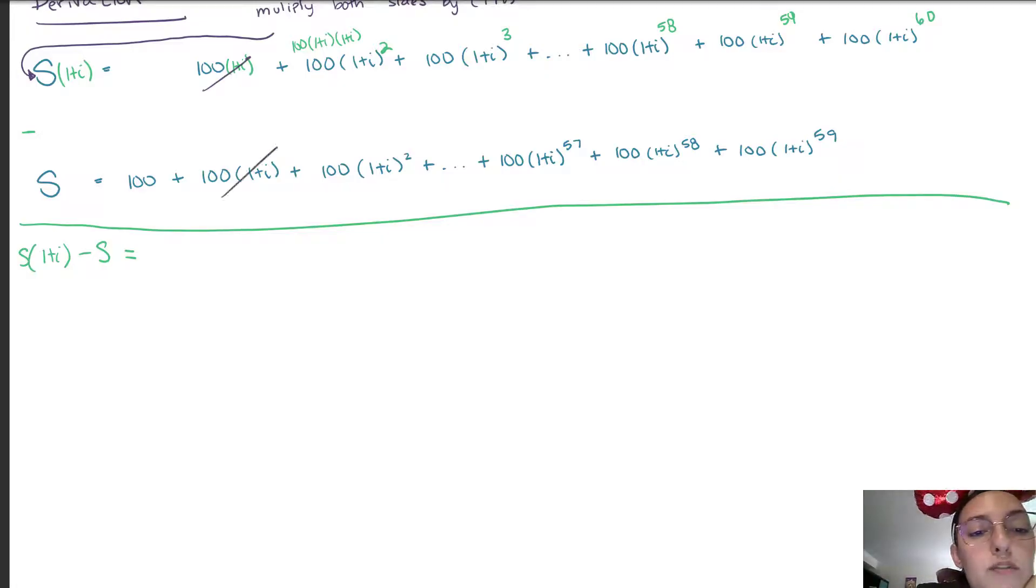Here what we're going to see is a lot of the terms are going to zero out. So for example this term to the first power, since we're subtracting them, they zero out. The second power zeros out, the third power will zero out from a term in here. All of these middle terms zero out. 58 will zero out here, the 57th will also zero out, and the 59th will zero out.